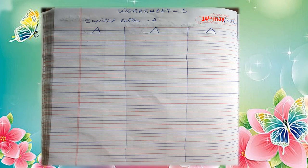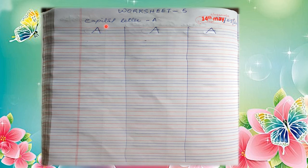We learned to write letter A today. Here is a worksheet for you — capital letter A. Write it down in your copy in beautiful handwriting. Follow the instructions from the video: make slanting line, slanting line, and sleeping line. We cover only three lines: red line, blue, and blue — starting from the first red line and stopping at the second blue line. Write it down and practice. We'll meet again in the next video. Bye-bye.